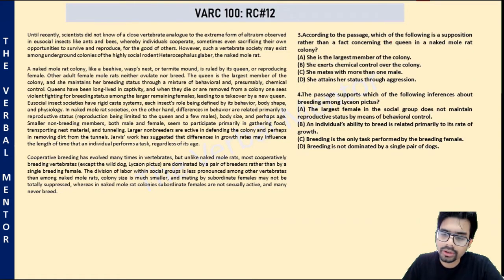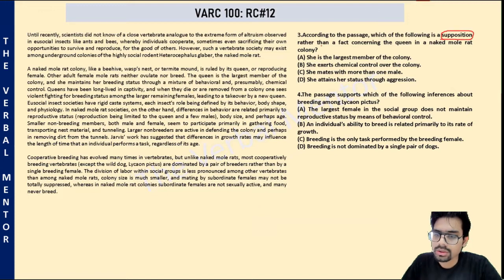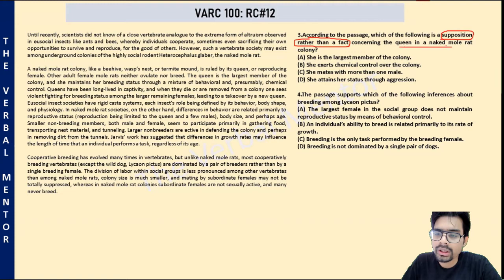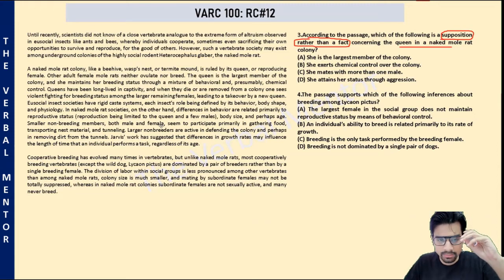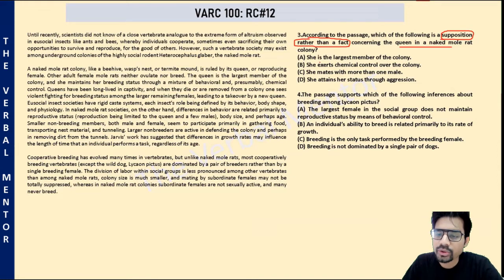Question three: according to the passage, which of the following is a supposition rather than a fact concerning the queen in the naked mole colonies? We need to find where the author assumed or supposed something rather than stated a fact. Option A: she is the largest member of the colony. This is a fact rather than a supposition — the author has clearly mentioned that the queen is the largest member.